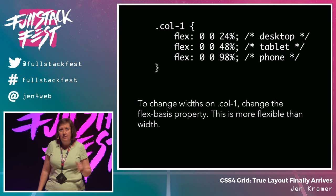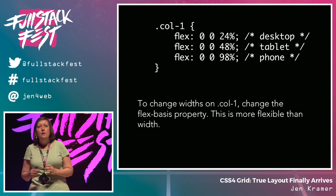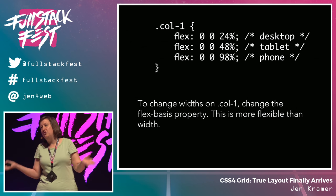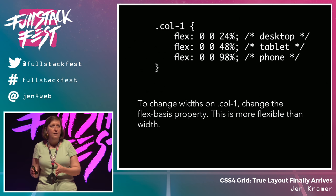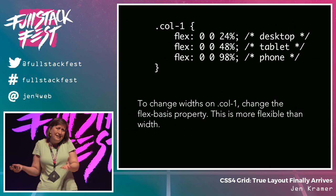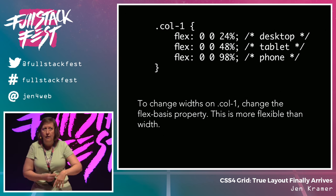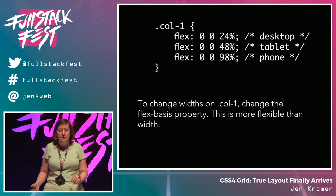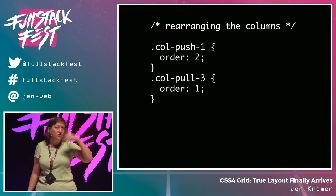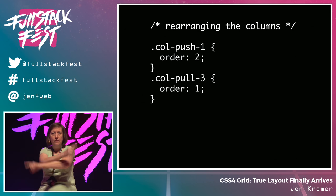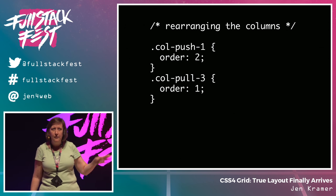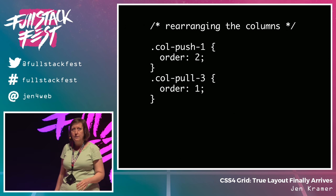We change the flex-basis property to control sizing. Normally with floats we use the width property — even 24% is an absolute value that never changes. With Flexbox, these numbers are flexible: if it doesn't quite reach 24%, it'll be close. That's the flexible part of Flexbox. If you want to rearrange columns, the code is even easier: take the order property and just change the number — swap number one and number two. Done. So simple. Lots of CSS thrown at you all at once.